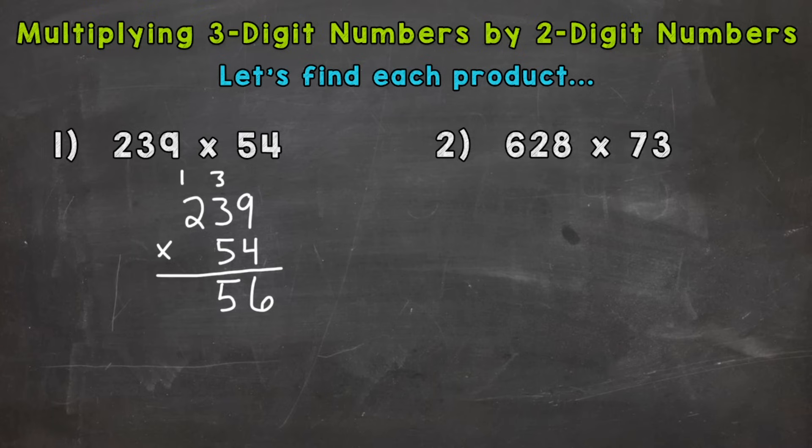Carry our one. Now we do four times 200 or just think of it as four times two, which is eight plus that one is nine. So four times 239 is 956.